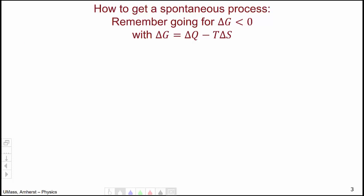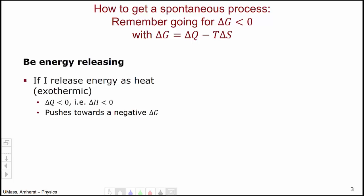So, how can I get a spontaneous process using this definition of delta G? Well, there's two ways. One, I can be energy releasing. If I release energy as heat, i.e., I'm an exothermic reaction, then the Q will be negative, and thus, if I'm at constant pressure, the enthalpy will be negative, and this will push us towards a negative Gibbs free energy change, a negative delta G.